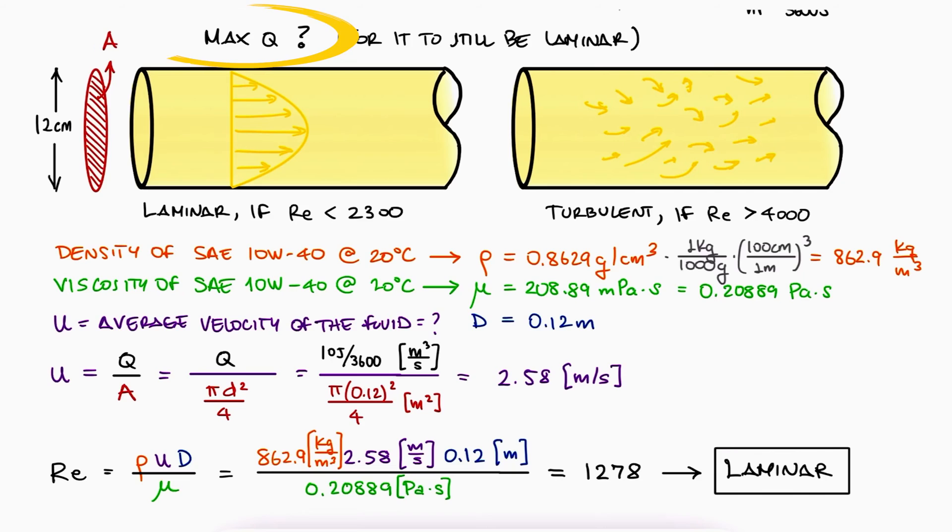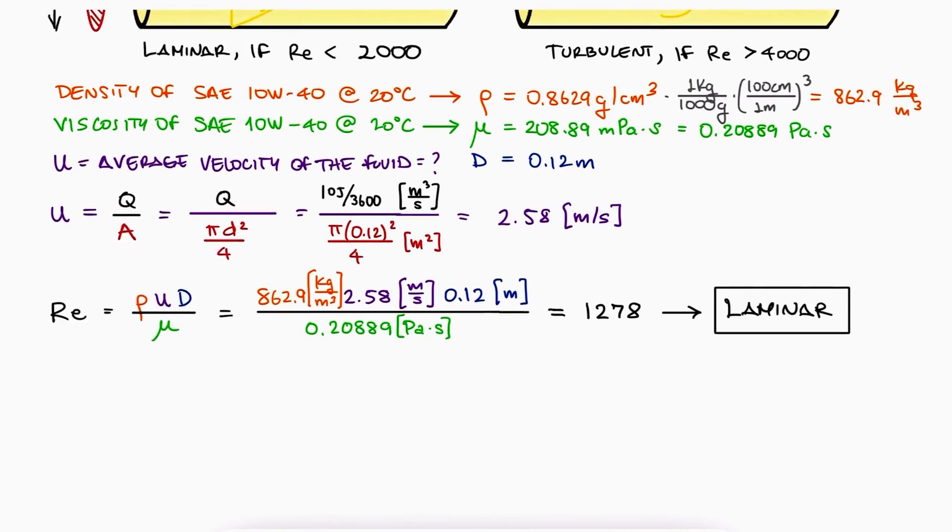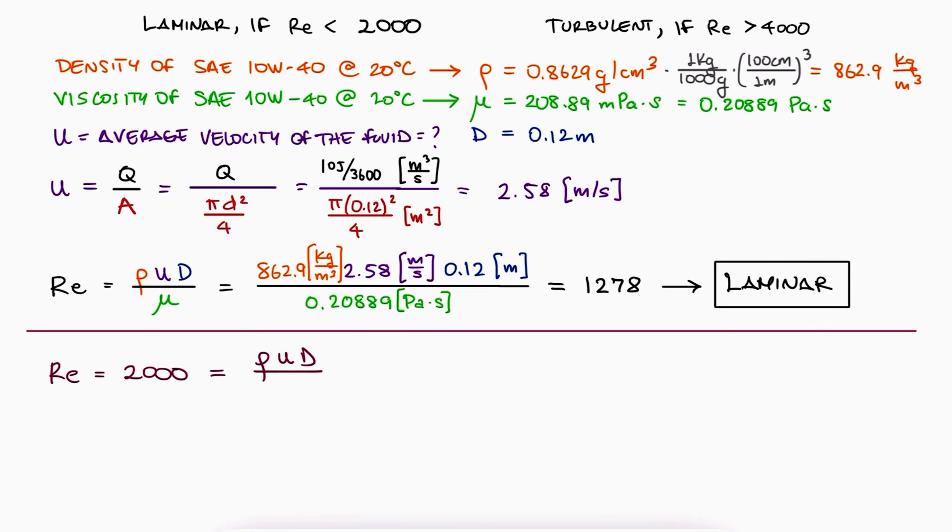To find the maximum flow rate for laminar flow, if we conservatively use 2,000 as the limit, we can set Reynolds number equal to 2,000 and solve for the velocity. After finding the velocity, we multiply it by the cross-sectional area to find the flow rate Q.